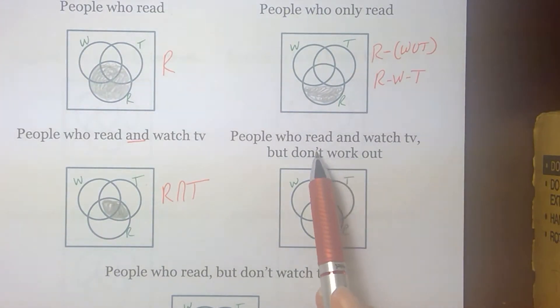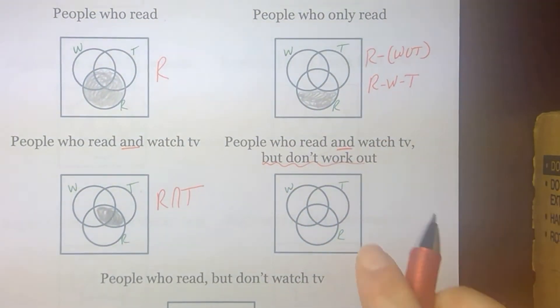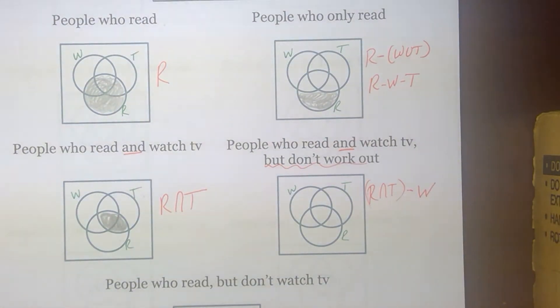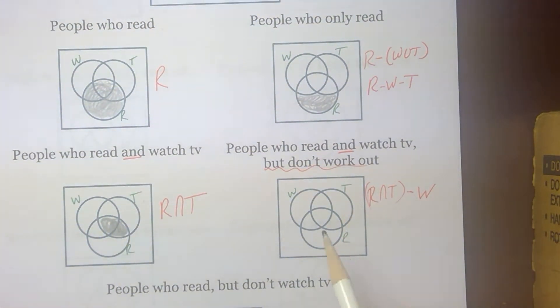Then we've got read and watch TV. That's where we started here. But don't work out. So we've got that intersection of read and watch TV. But then we're going to take away the people who work out. So instead of loops 5 and 6, we've just got loop 6. That's that intersection of read and TV without the working out people.